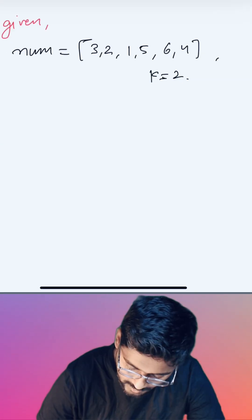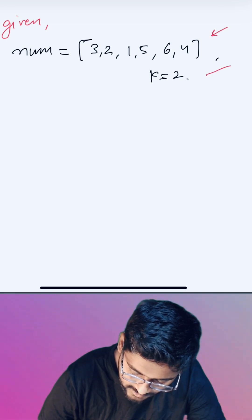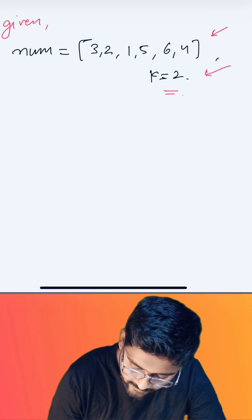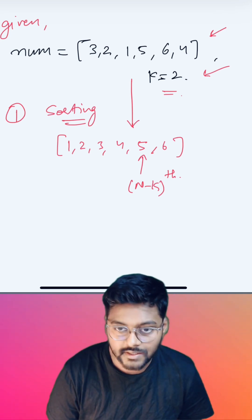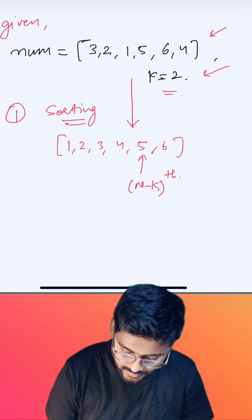So how do we solve this question? Given is an integer array and an integer k, that kth largest element we have to return. If we were allowed to use sorting, we could have directly returned the kth largest element.